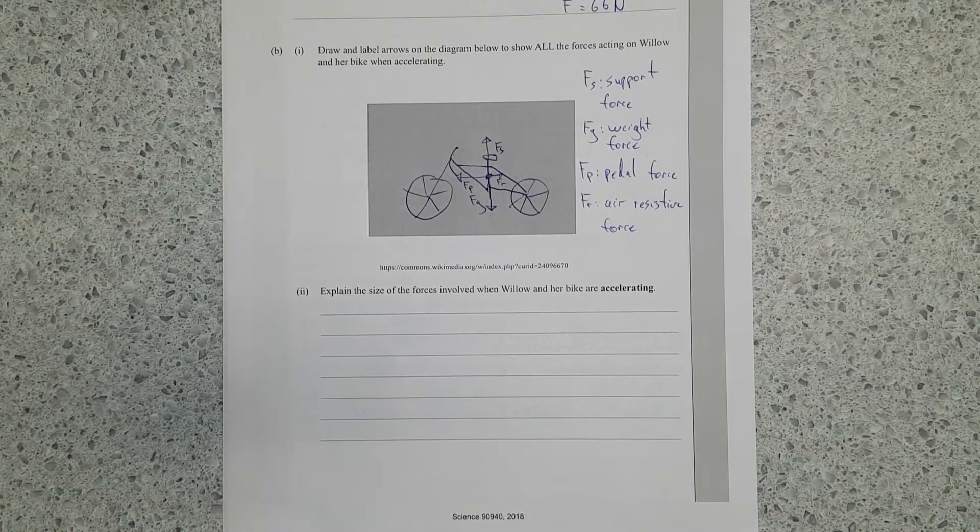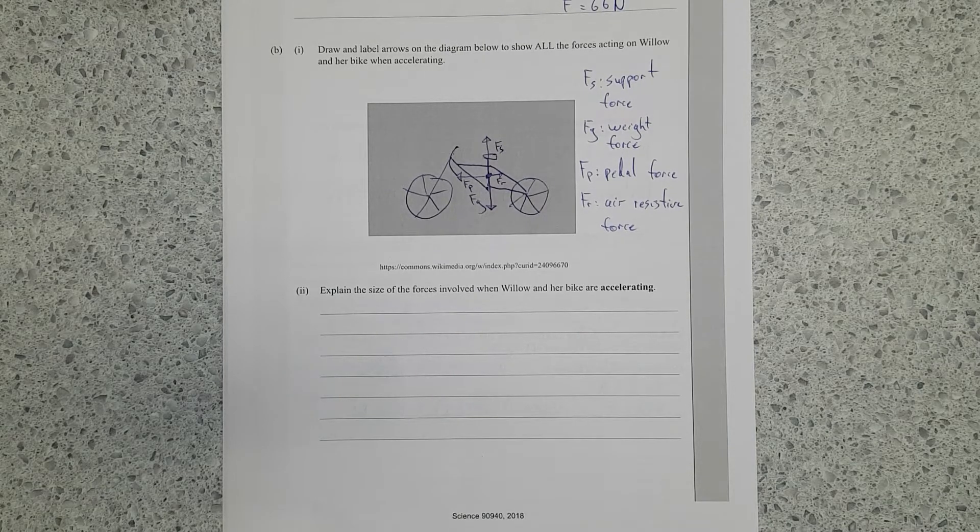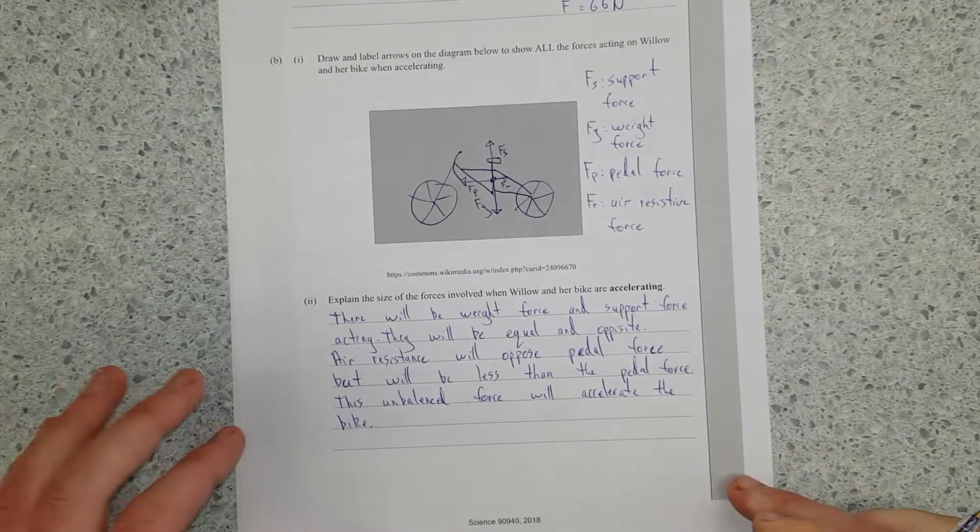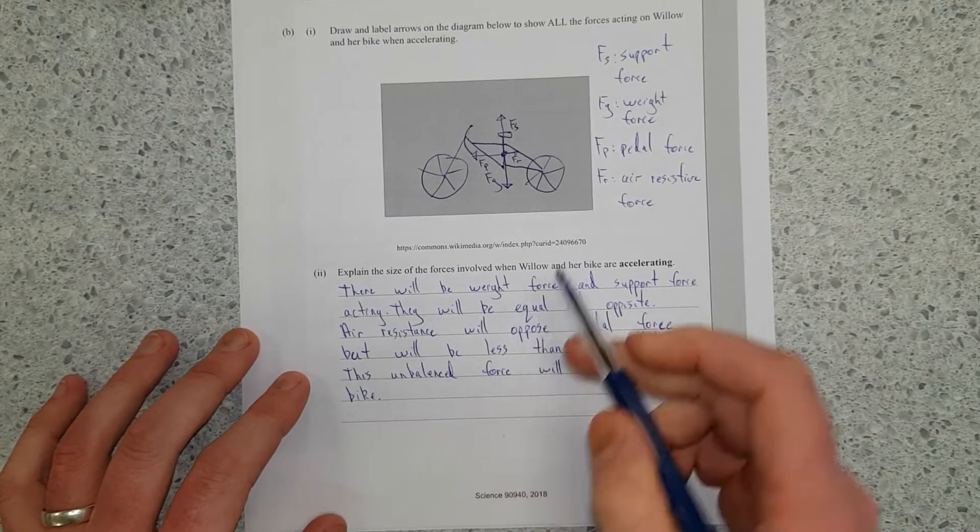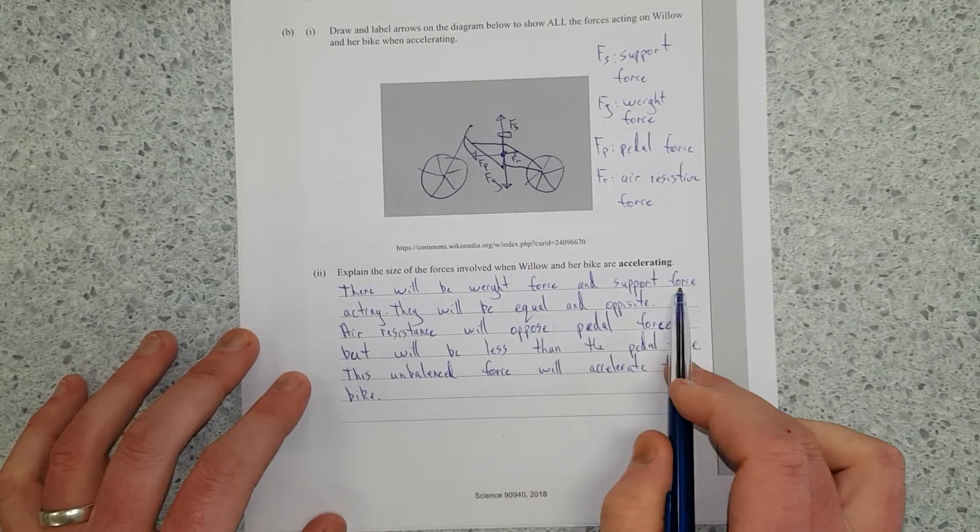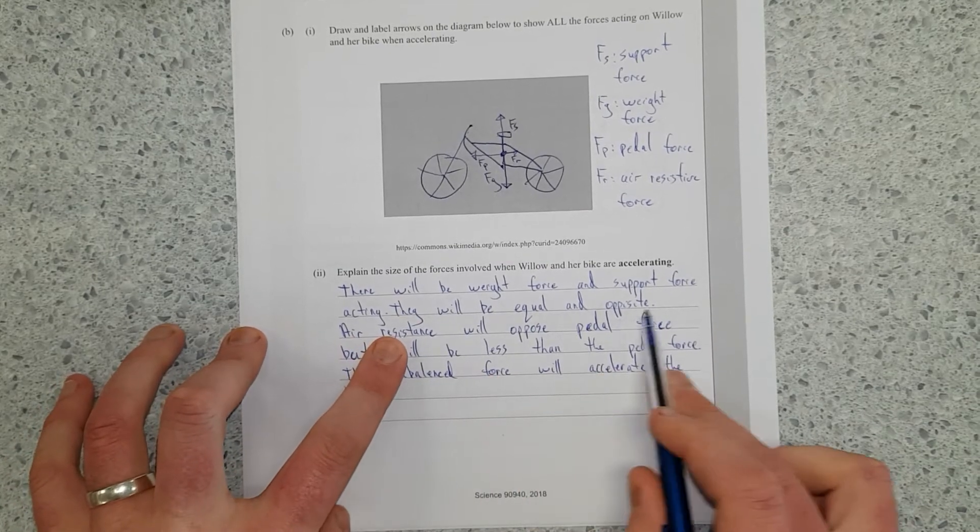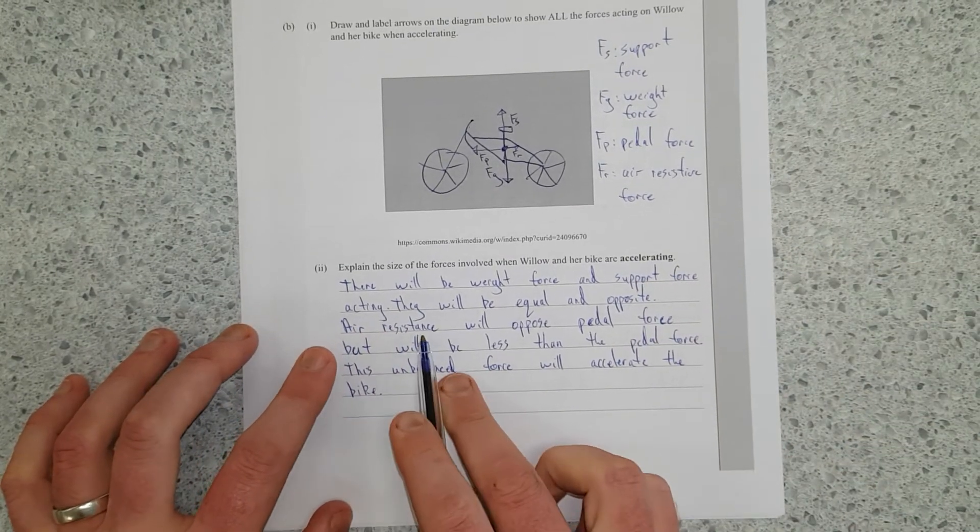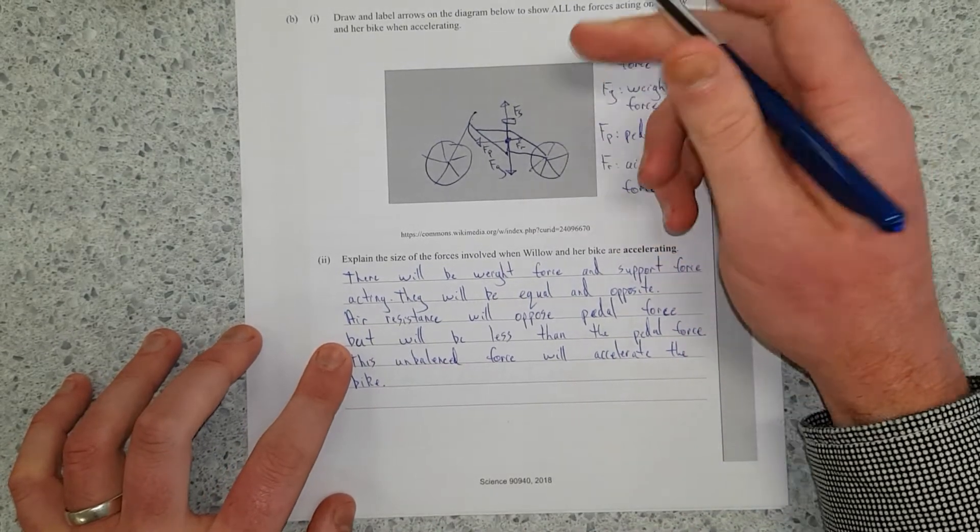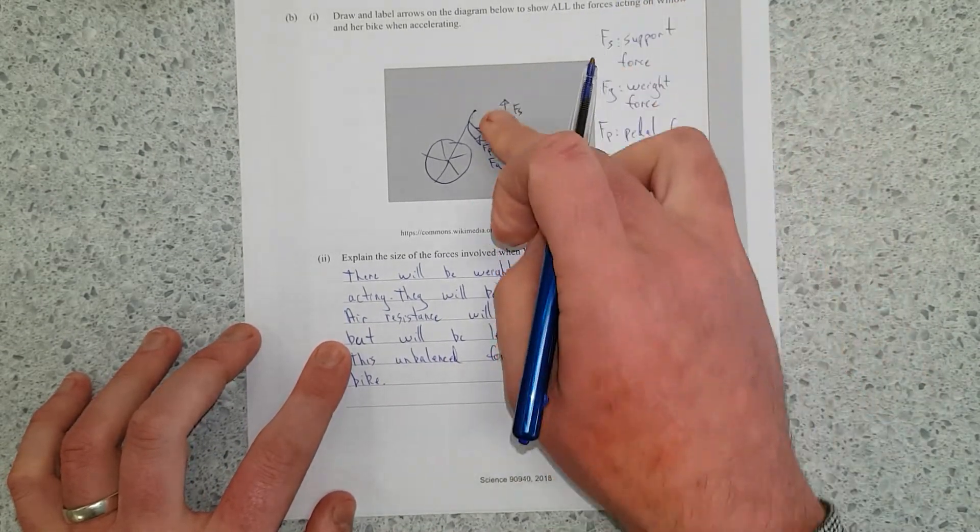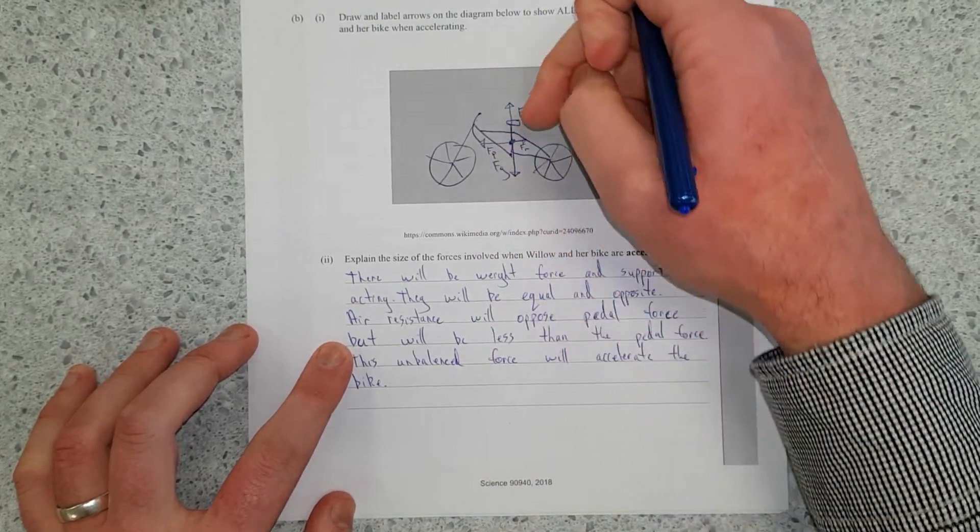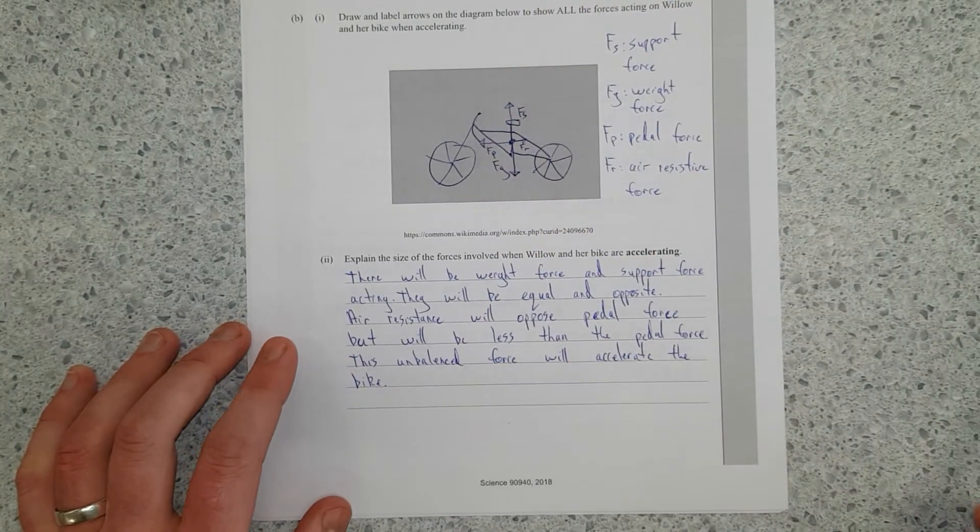Explain the sizes of the forces involved when Willow and her bike are accelerating. So I'll pause, write the answer, and discuss. Right, so I've said there will be weight force, that's FG, and support force acting. They will be equal and opposite, so they cancel out. There's opposite, not opposit. So they cancel out. So if these weren't balanced, they'd either be accelerating up and lifting off the ground, or falling in, like, going into the ground. And you don't get that. You don't want that.